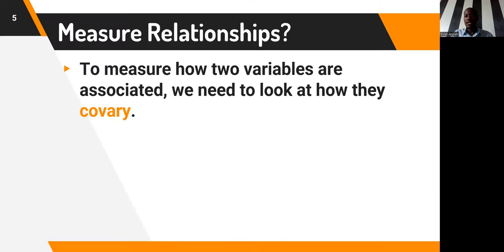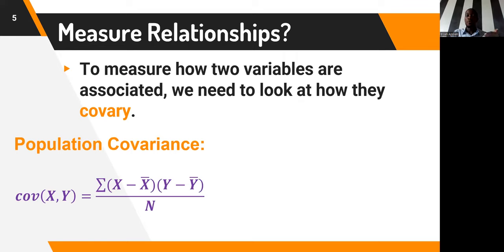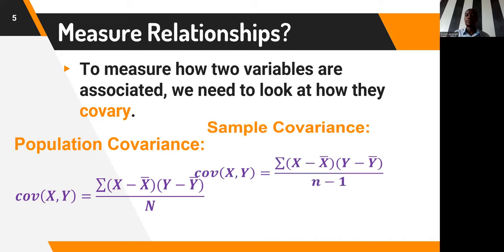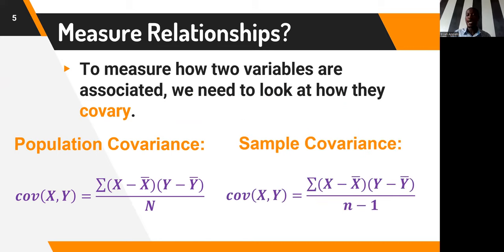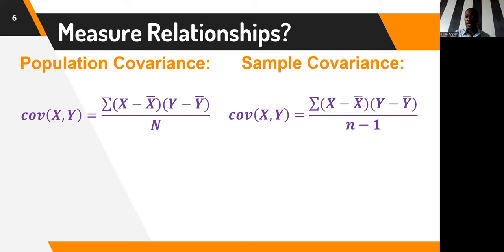How do we measure relationships? To measure how two variables are associated, we need to look at how they co-vary, and so that brings into the scene what we call covariance. If you want to calculate the population covariance, it is the cross product of the deviations of the two variables divided by the population. The sample covariance would have the denominator as n minus one.